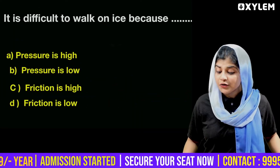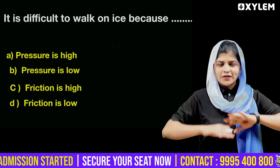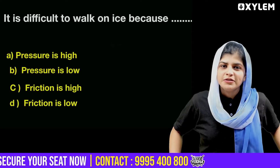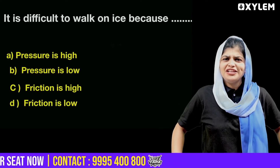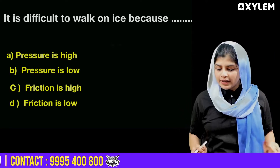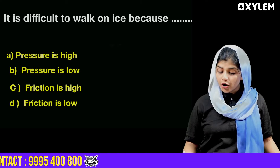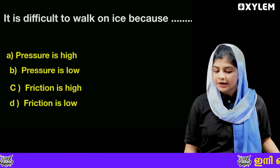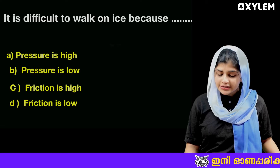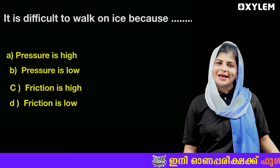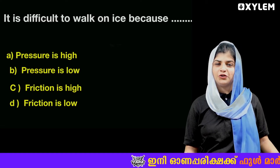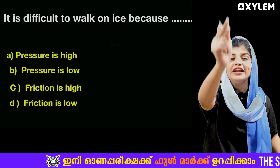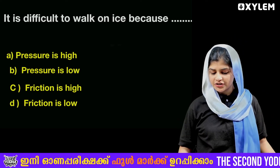Next question: It is difficult to walk on ice because... Here we have four options: A) Pressure is high, B) Pressure is low, C) Friction is high, D) Friction is low. The answer is D — friction is low. That's why it is difficult to walk on ice.